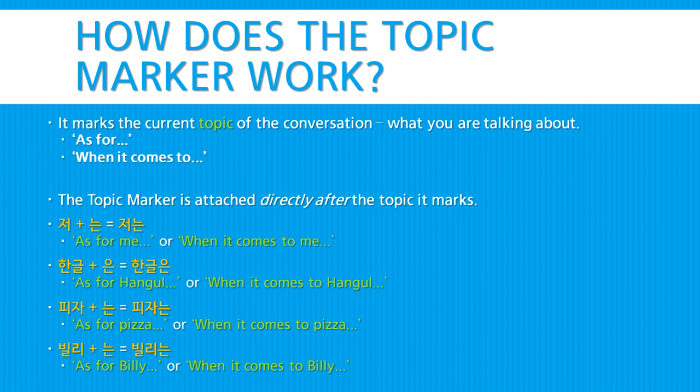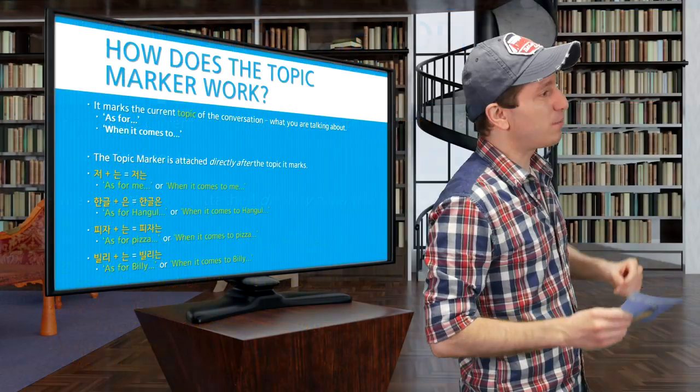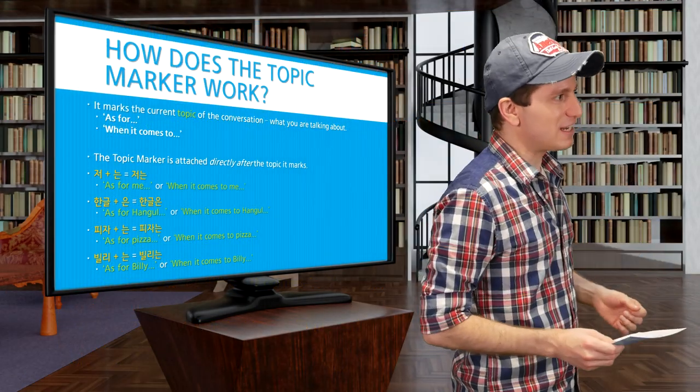비자는, as for pizza, or when it comes to pizza. 빌리는, as for Billy, or when it comes to Billy. So now we're going to be talking about Billy. That's how the topic marker works, and that's how you can use it in your sentences.